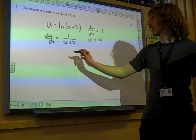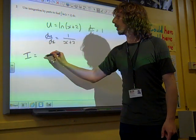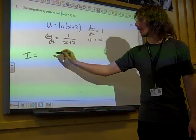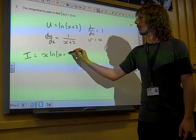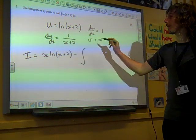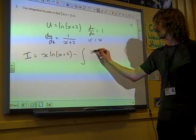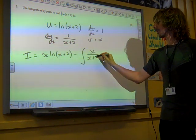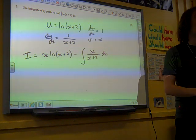So the integral becomes u times v, so x times the natural log of x plus two, minus the integral of v du/dx, x over x plus two.